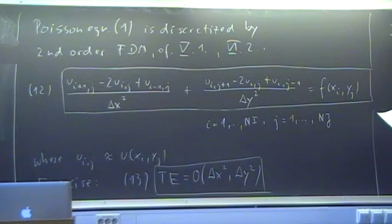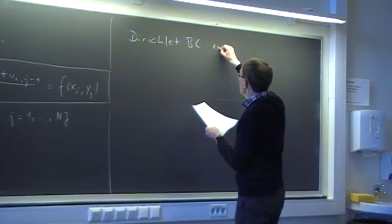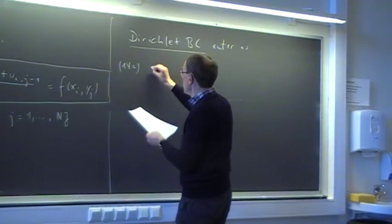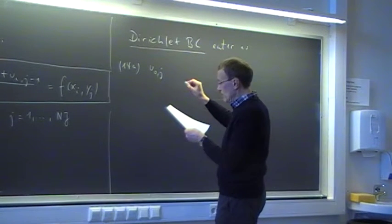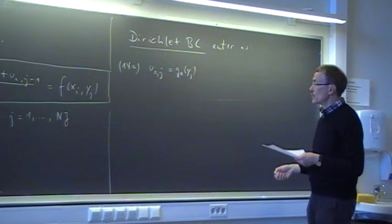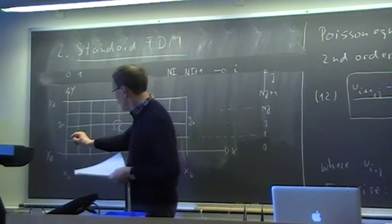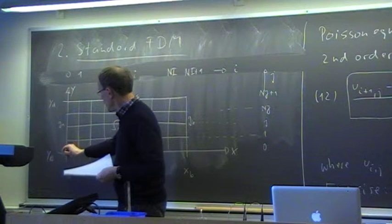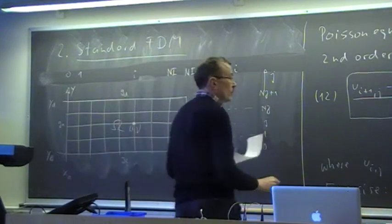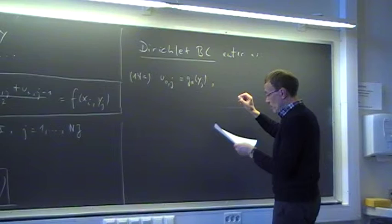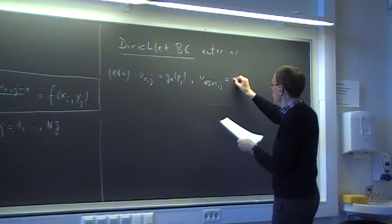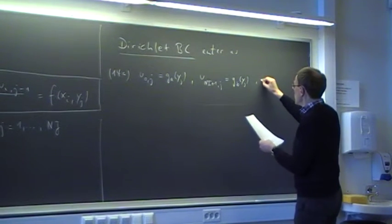The Dirichlet boundary conditions enter as follows. At the left boundary, i is zero, and we take there the boundary condition at y_j — that is, g_a(y_j). Likewise, on the right-hand side we are at grid point N_i+1, j, where we have boundary condition g_b(y_j). This is true for all grid points j from 1 to N_j.